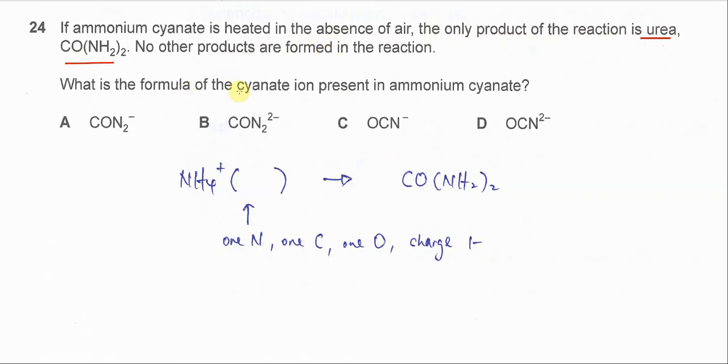What is the formula of the cyanide ion present in ammonium cyanide? First we need to balance the equation. Make sure no oxygen is involved. So it's just a salt forming urea.